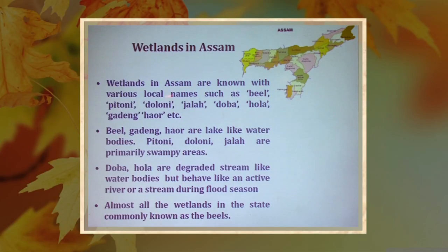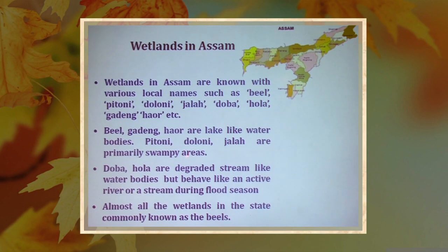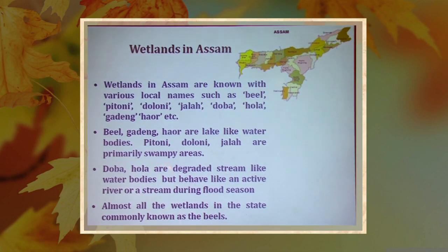If you look at the wetland condition of Assam, wetlands are known by various local names such as Beel, Pitoni, Dolony, Zola, Duba, Hola, Gadang, Houd, etc. Beel, Gadang, and Houd are lake-like water bodies. Pitoni, Dolony, and Zola are primarily swampy areas. Duba and Hola are degraded stream-like water bodies that behave like an active river or stream during flood season. Almost all wetlands in the state are commonly known as Beels.